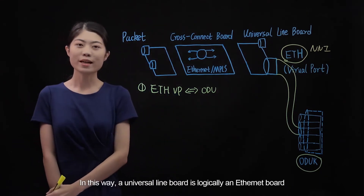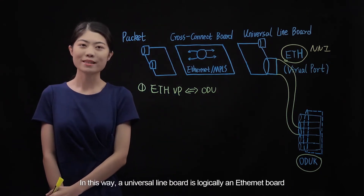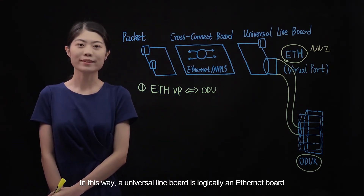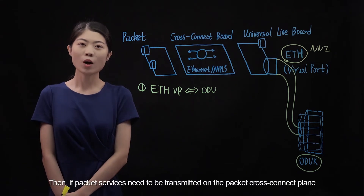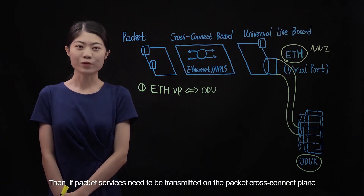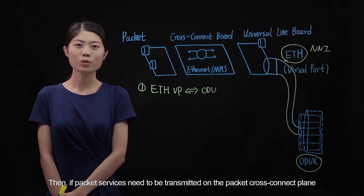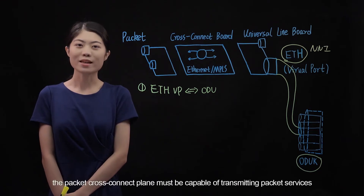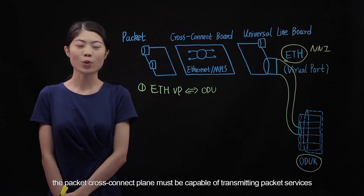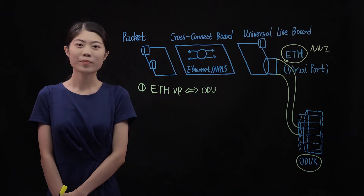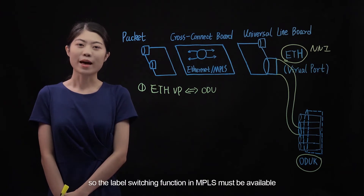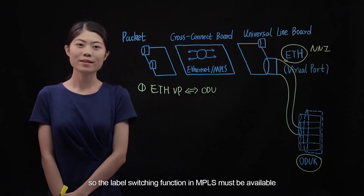In this way, a universal line board is logically an Ethernet board. Then, if packet services need to be transmitted on the packet cross-connect plane, the packet cross-connect plane must be capable of transmitting packet services, so the label switching function in MPLS must be available.